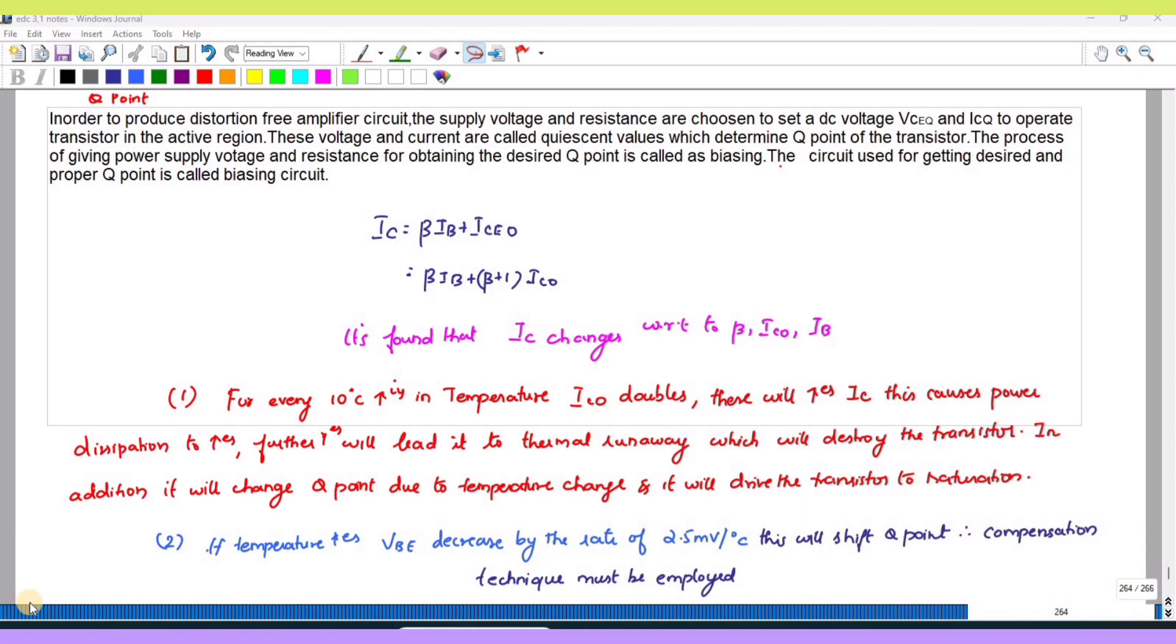First, let me take IC naught. This IC naught will get doubled for every 10 degree increase in temperature. This will cause an increase in the collector current which will lead to more power dissipation.